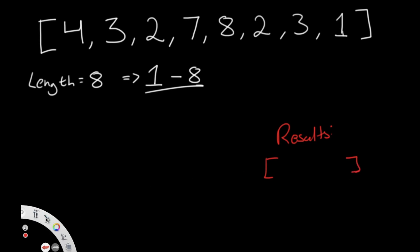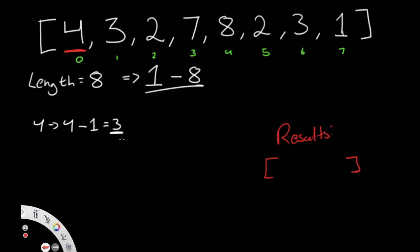We're going to iterate through each element only one time. Starting with the first element, we take its absolute value — the absolute value of 4 is 4 — then subtract 1, giving us 3, and go to index 3. That index has a value of 7. We then multiply that value by negative 1, making it negative 7. This marking will serve an important purpose we'll understand soon.